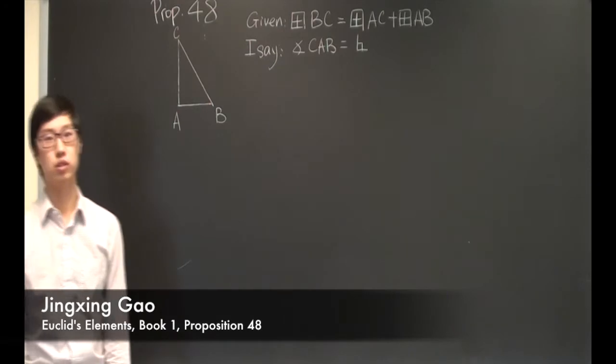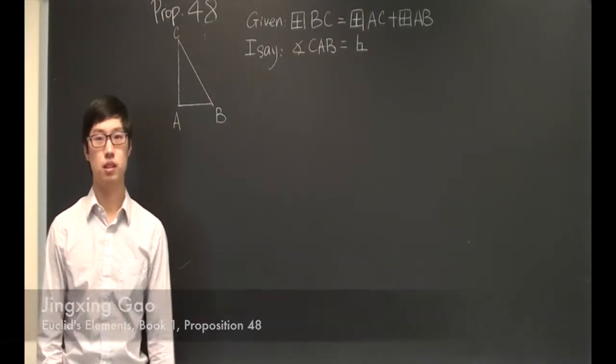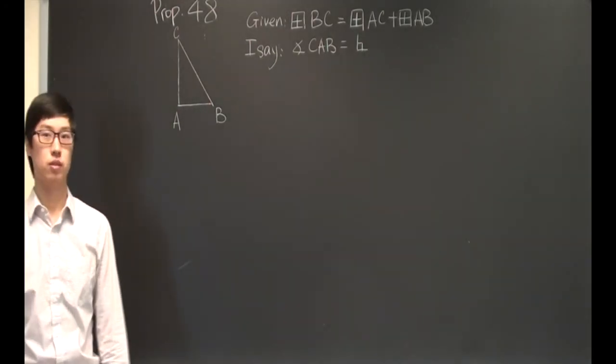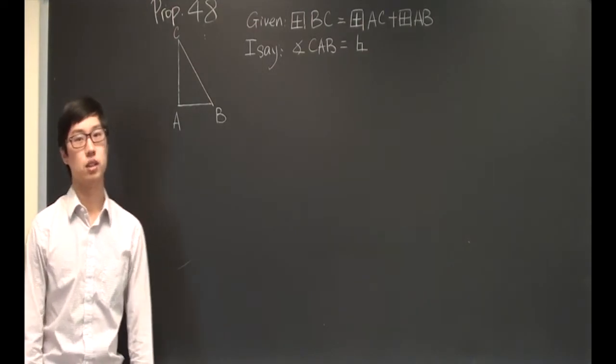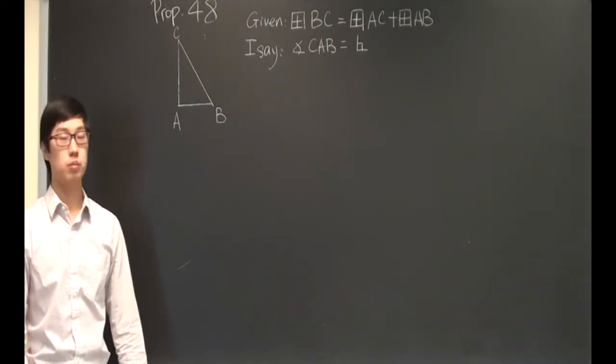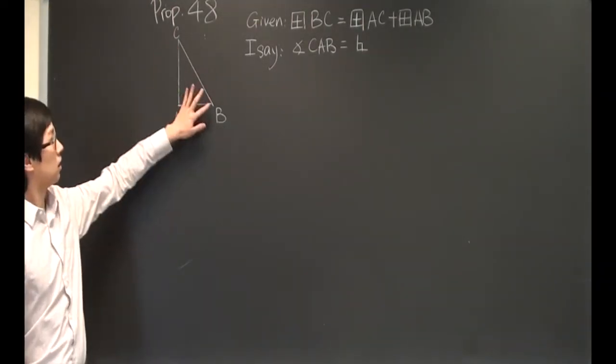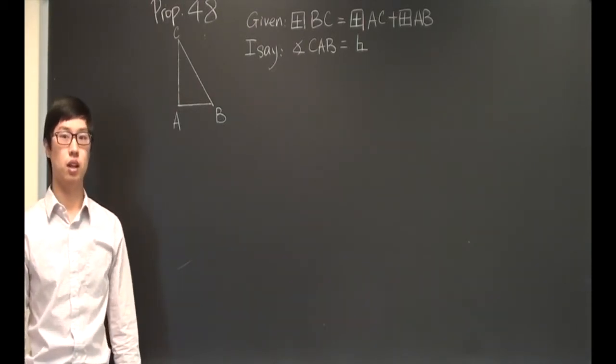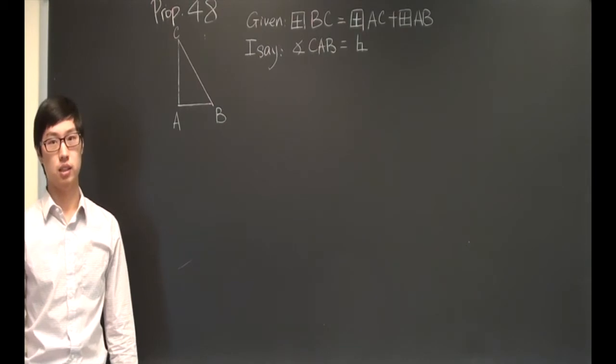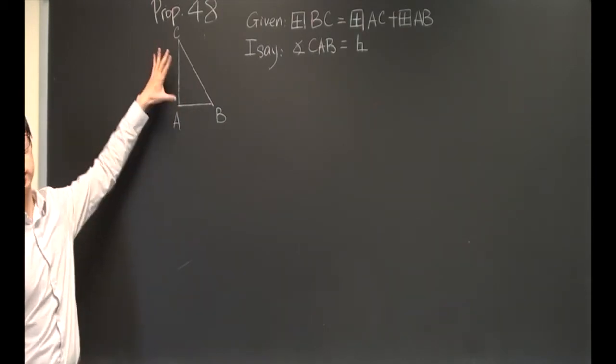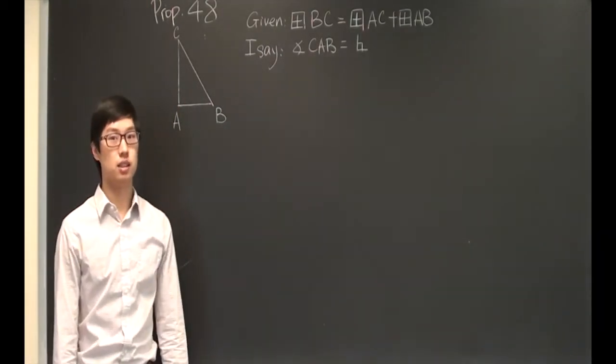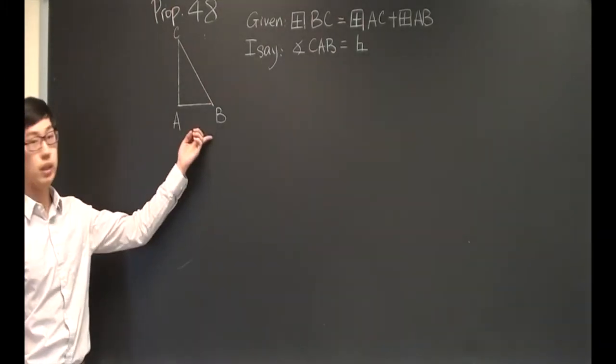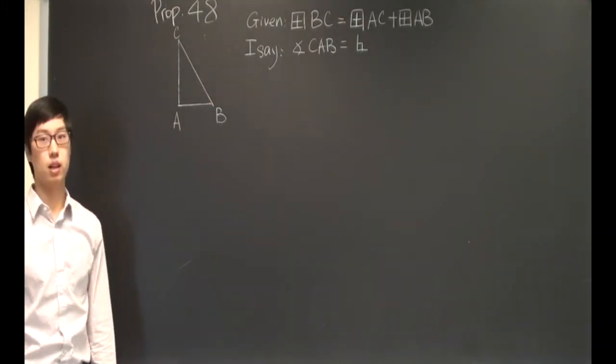Hello, we are going to do the last proposition of Book 1, Proposition 48. Given that square on BC is equal to the sum of square on AB and AC, I say the angle BAC is the right angle.